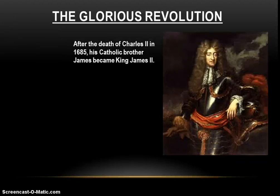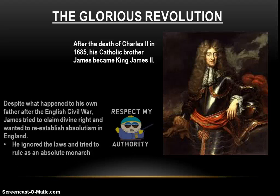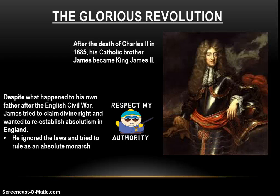Charles doesn't live forever, and after he dies, his brother James becomes the new king, King James II, in 1685. The problem is that James is a Catholic, and Catholics tend to believe in divine right. And despite what happened to his own father after the English Civil War, James tries to claim divine right and tries to reestablish absolutism in England. He ignores the laws and tries to rule as an absolute monarch. We know this didn't end too well last time — it's not clear why he thought it was a particularly good idea — but he does try to go down that road again.